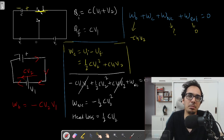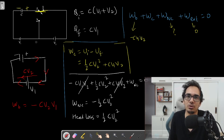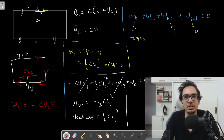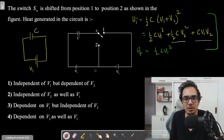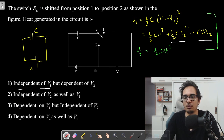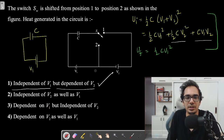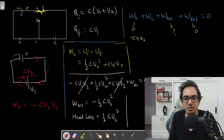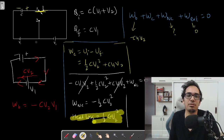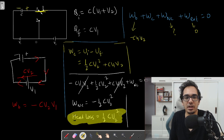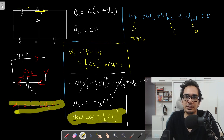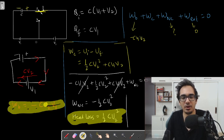The heat loss only depends on V2 — it does not depend on V1. This is a deceptively simple question that students commonly get wrong. The answer is: heat loss is independent of V1 and equals ½CV2². Never forget the work done by the battery when charge is changing.